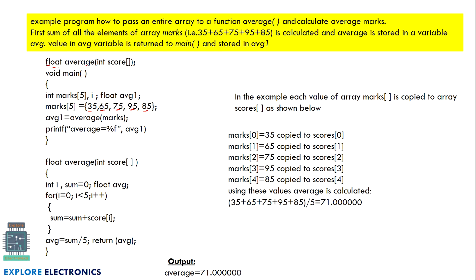We specify that the average function will receive an array of type integer. This is how we indicate that the function is ready to accept data in the form of an array with integer values. In the main function, we declare int marks[5], an index variable i, and a float variable average1 — which will hold the final calculated average marks.